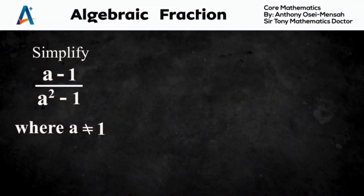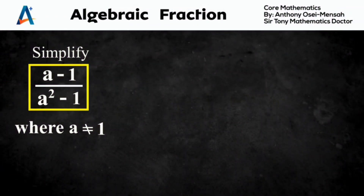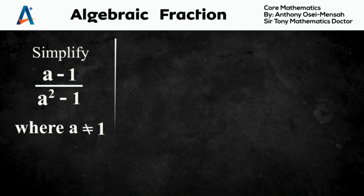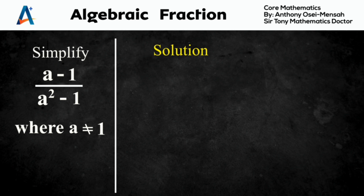This question reads: simplify (a minus 1) all divided by (a squared minus 1), where a is not equal to 1. Let us see how to simplify such an algebraic fraction question. We will repeat the algebraic fraction and then try to simplify. So the question is (a minus 1) all divided by (a squared minus 1).